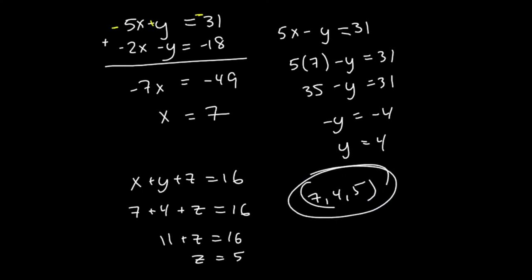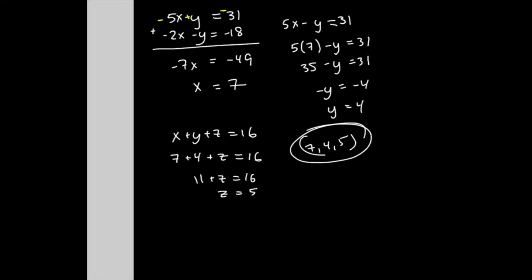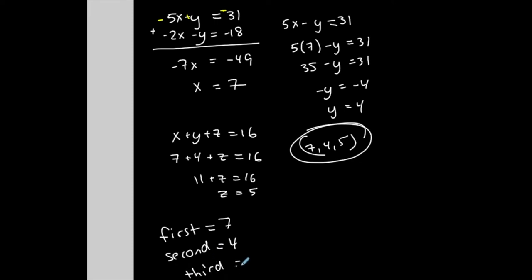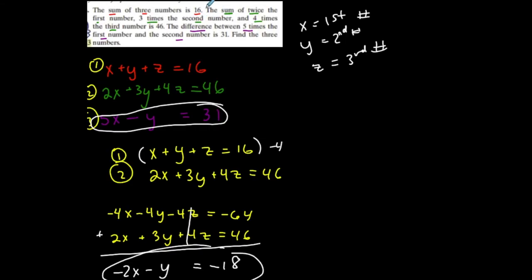Don't forget it's a system of equations that came from a situation. So the first number is 7, the second number is 4, and the third number is 5 — such that their sum is 16, the sum of twice the first, three times the second, and four times the third is 46, and so on.